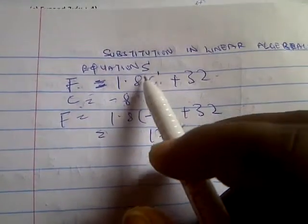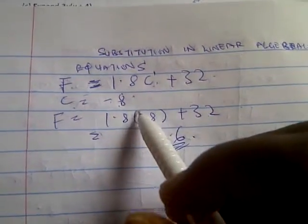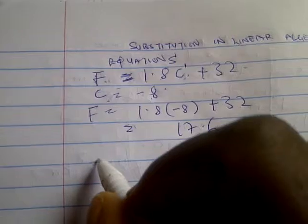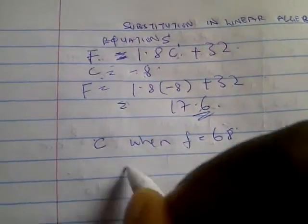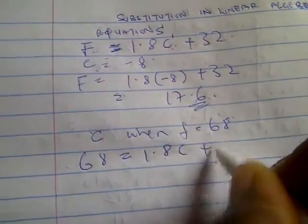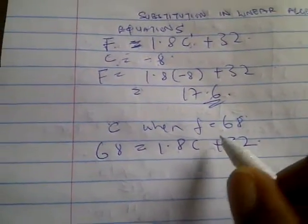There's another one you're going to be asked: find the value of C when F is 68. So wherever you see F, you put 68. So you have 68 equal to 1.8C plus 32. Now we'll have to subtract both sides by 32 so that we'll have 1.8C on its own.